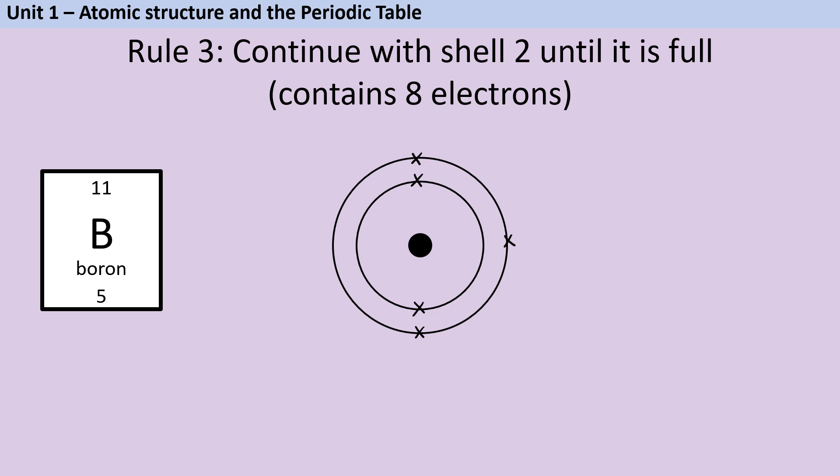We carry on with boron with two electrons in the first shell and three electrons in the second shell, followed by carbon with two electrons in the first shell and four electrons in the second shell.